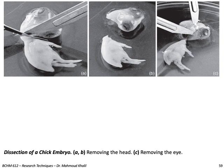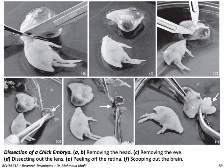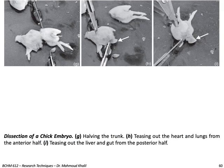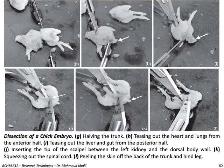You start by removing the head, then remove the eye, dissect out the lens, peel off the retina, and scoop out the brain. After that, you halve the trunk, cutting it into two halves. You tease out the heart and lungs from the anterior half, and tease out the liver and gut from the posterior half. Then you insert the tip of the scalpel between the left kidney and the dorsal body wall, squeeze out the spinal cord, and peel the skin off the back of the trunk and behind the legs.